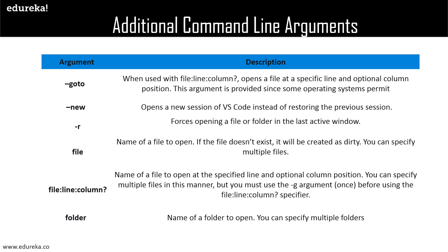We also have 'file name' — the name of the file to open; if the file does not exist, it will be created as default, and you can specify multiple files. Then there is 'file:line:column?' which comes in handy as the name of a file to open at a specified line or optional column position; you can specify multiple files in this manner but must use the -g argument before the file:line:column specifier. Lastly, we have 'folder' — the name of a folder to open, and you can specify multiple folders here as well.